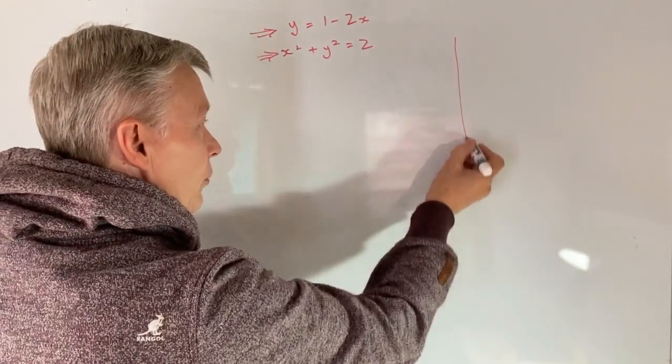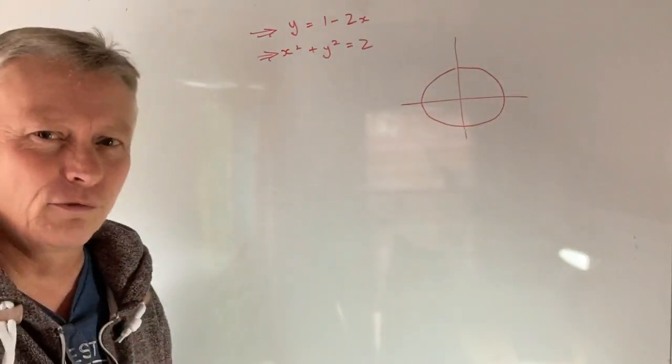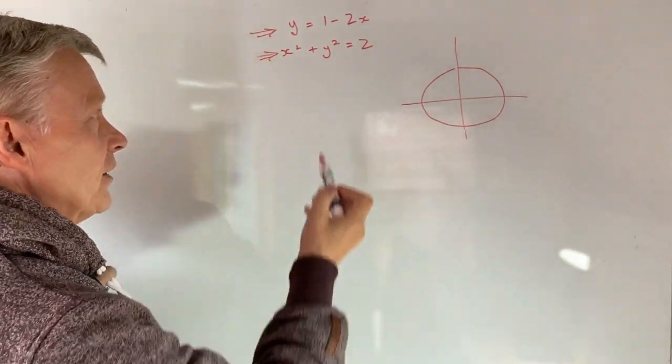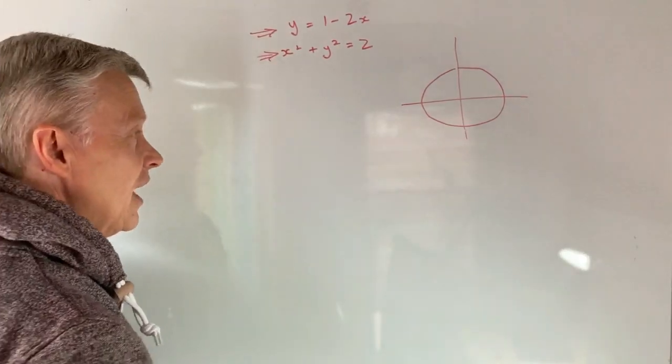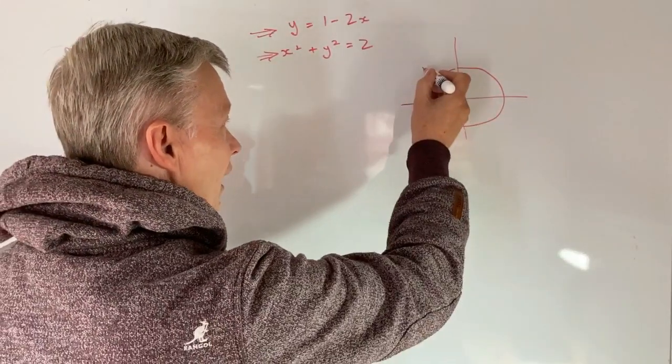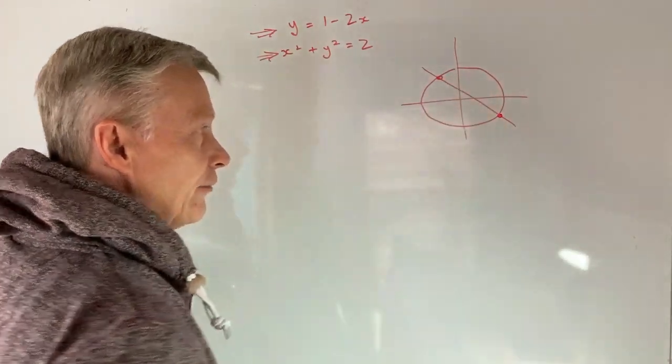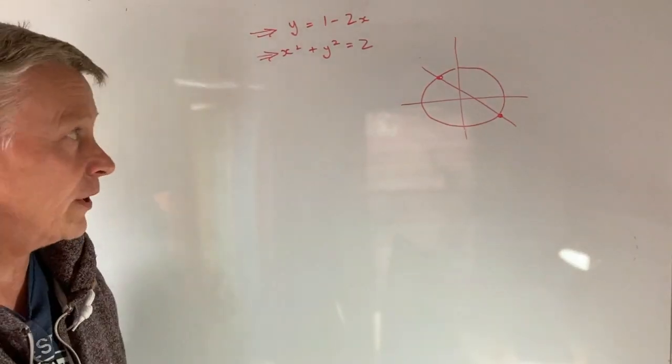So effectively what we've got is a circle with a radius of roughly about 1.4 if you like the root of 2 and we've got a straight line that goes through it. And what we're trying to establish is the points at which they intersect the circumference and the straight line and that's what we're going to try and look at at the moment.